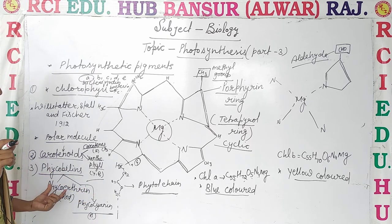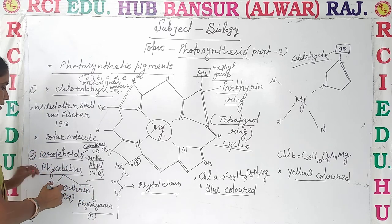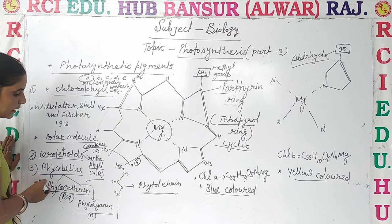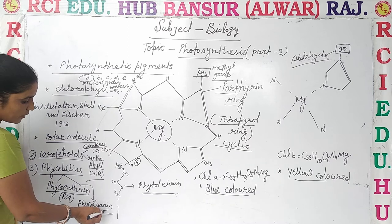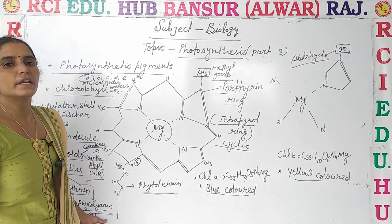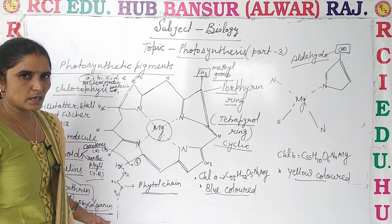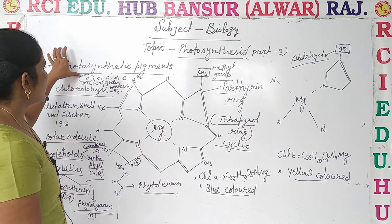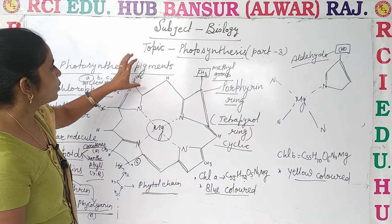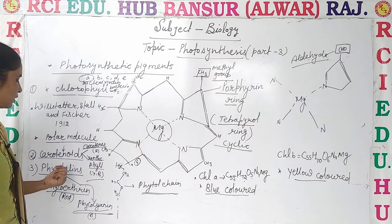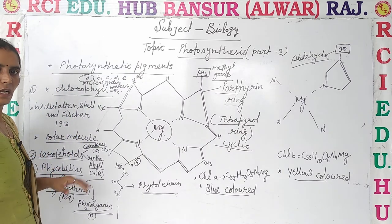What is phycobillin? In two parts: phycoerythrin is of red color and is mainly present in red algae. The second is phycocyanin, which is present in blue-green algae, also called cyanobacteria, and is blue in color. So you can see that the photosynthetic pigments are three: chlorophyll, carotenoids, and phycobillins.